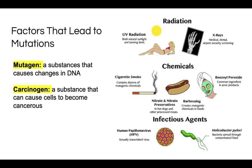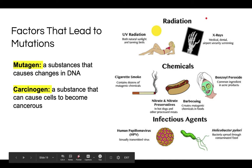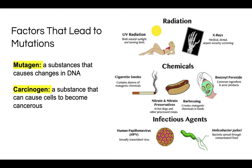Mutations are changes in the DNA that can lead to cancer. A mutagen is any substance that can cause changes in DNA. Examples include radiation, certain chemicals, and certain infectious agents. Being exposed to high amounts of UV radiation — from the sun or tanning beds — can increase your risk for skin cancer. X-rays from medical, dental, or airport security machines also count; people who work in those fields and are constantly exposed are at higher risk.